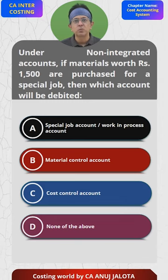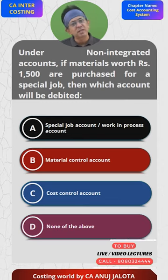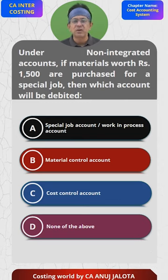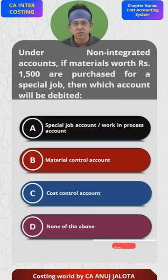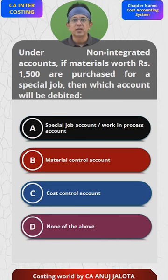But if raw material is purchased especially for a job, raw materials will never enter the stores department. They will directly enter the factory only — factory means WIP account or the special job account. So the entry should be special job account debit to your GLA account.